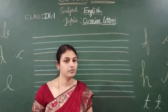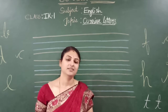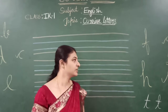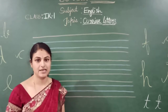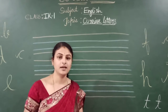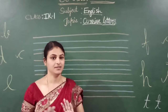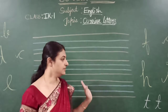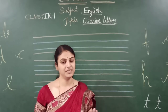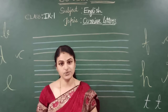Children, we have almost completed the cursive letters A, B, C, D. Till W we have learnt. Today we are going to learn X, Y and Z. By this we are going to complete the cursive letters A to Z.